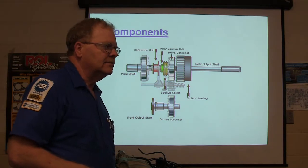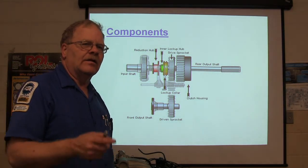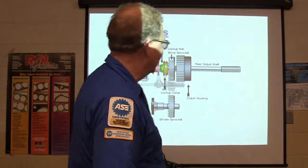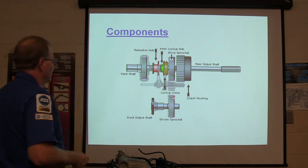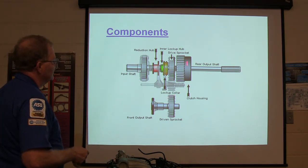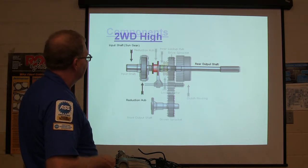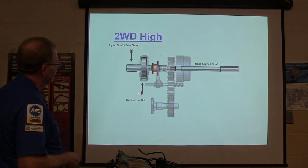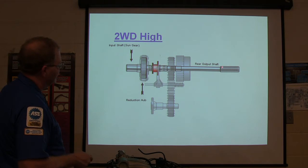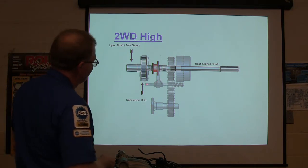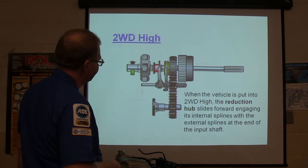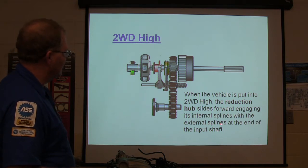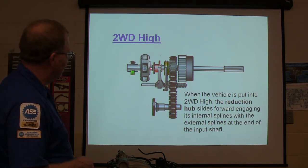That's a fun job, isn't it? Did you all enjoy tearing it down? One of the things you learned when you tore that transfer case down is it's got an oil pump in it to keep it lubricated. You've got a driven sprocket going to the front output shaft, the clutch housing gear, and the drive sprocket. You've got an input shaft — that's the sun gear on your planetary — and there's your reduction hub and rear output shaft. See this collar and shift fork? It kind of looks like a manual transmission fork.